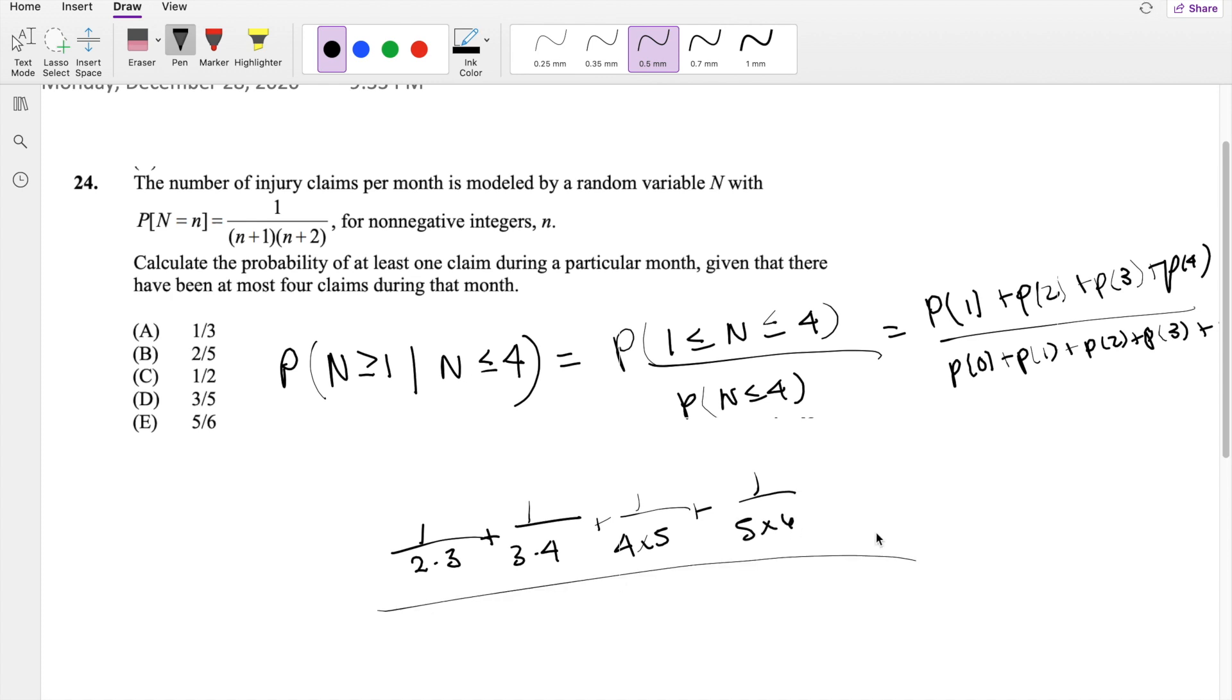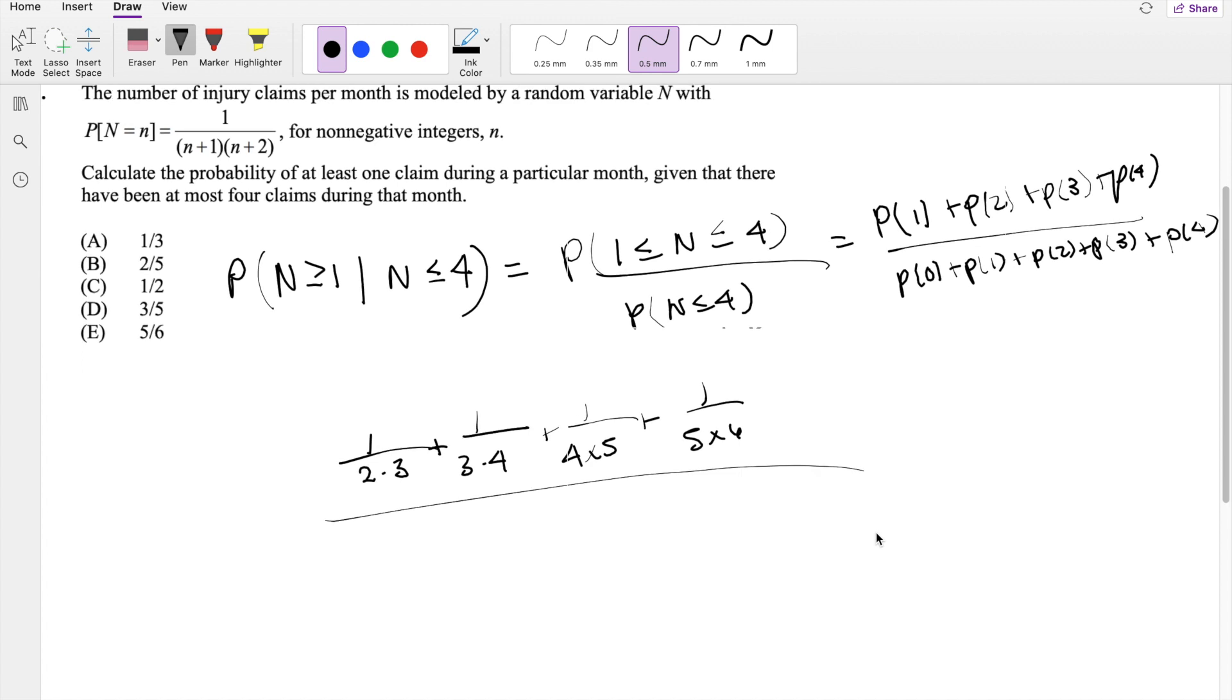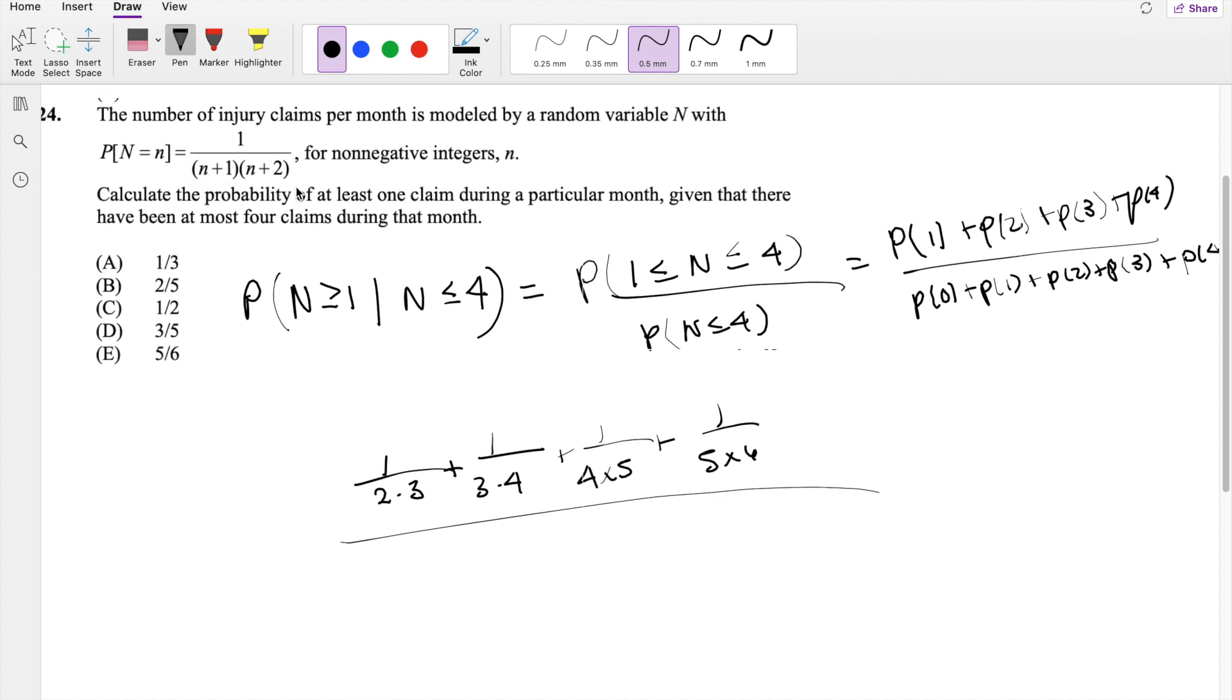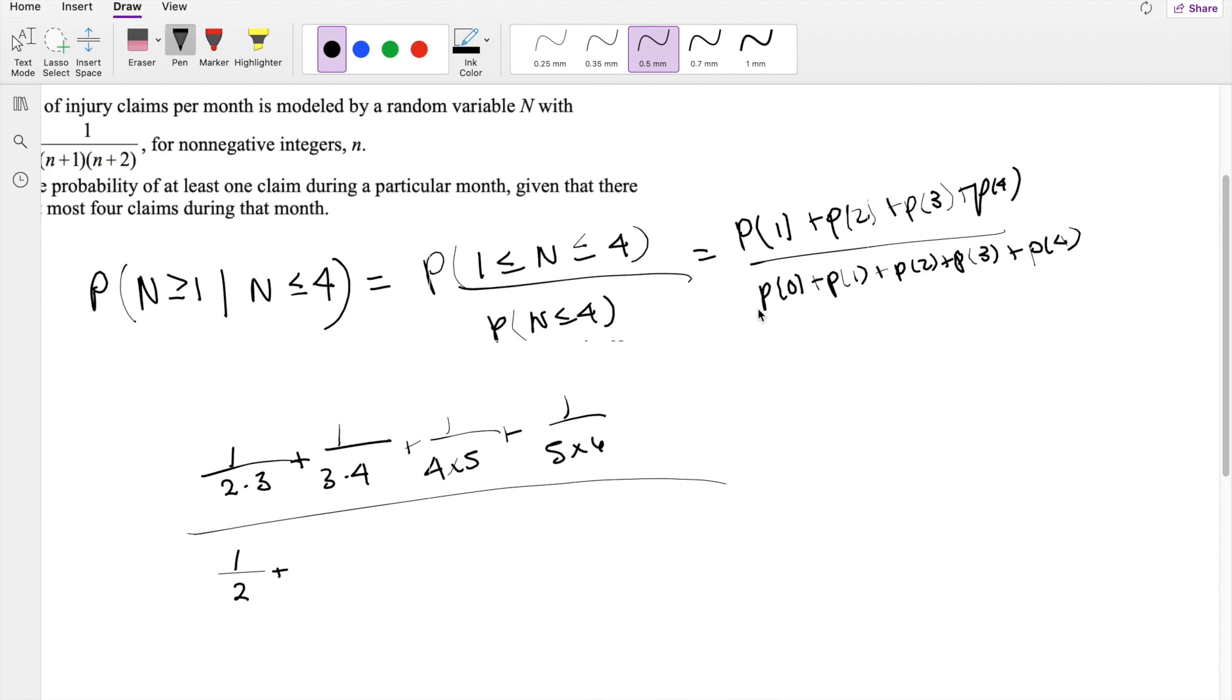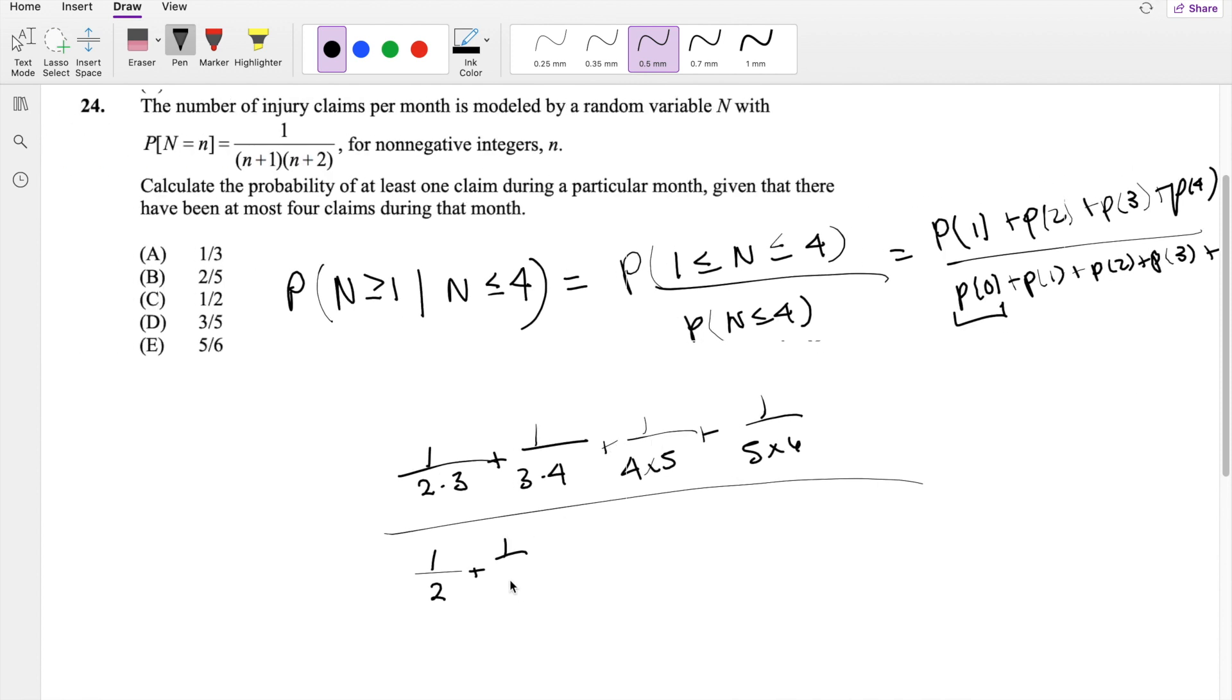Divided by the probability that is 0. So that is, when I plug in 0, you get 1 plus 2, so that's half. Plus the same thing here in the numerator, everything other than probability of 0 is the same. So that's over 6 plus 12 plus 20 plus 30.